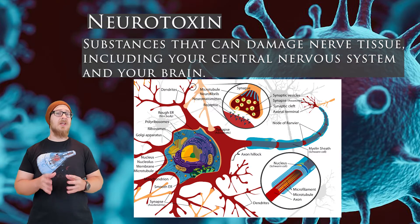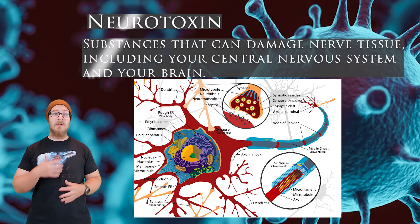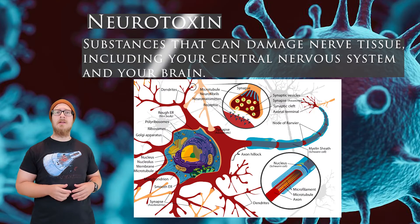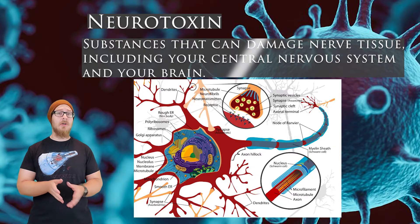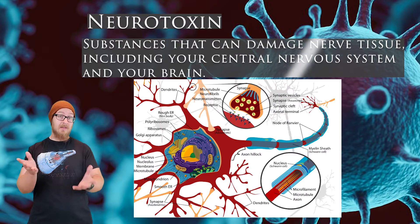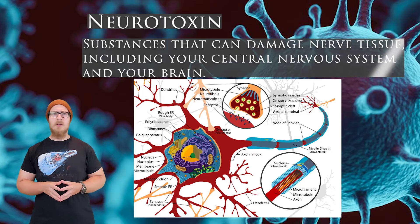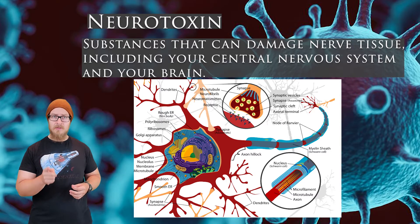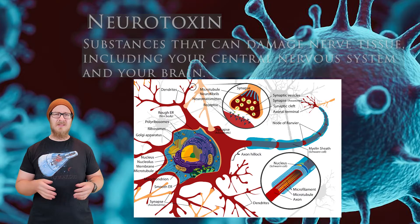Neurotoxins are substances that can damage nerve tissue, including your central nervous system and your brain. Common examples of neurotoxins are lead, mercury, and ethanol, which is the active ingredient in the alcohol we drink. You should not drink until you're 21, and even then, don't drink.